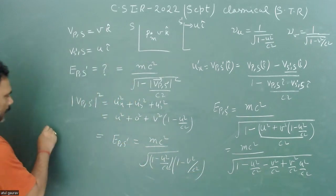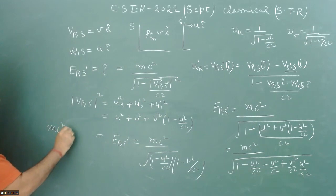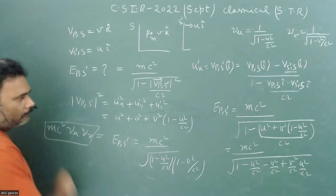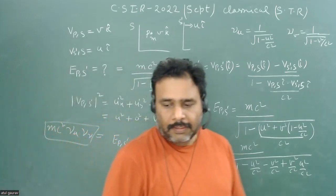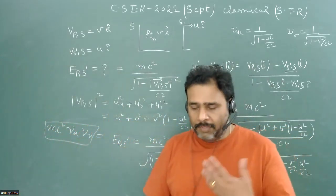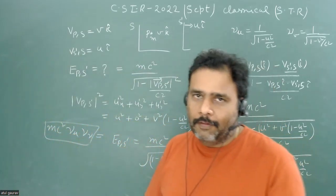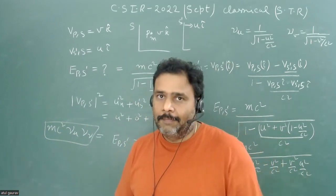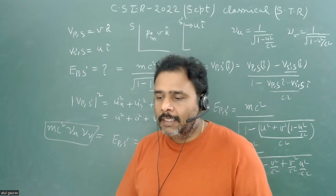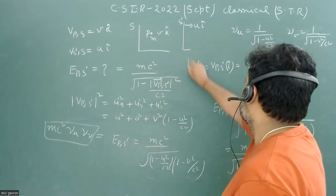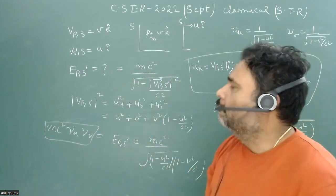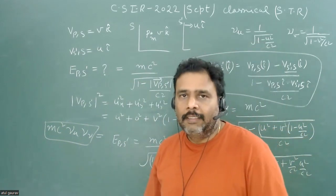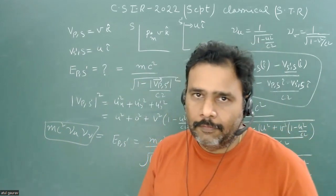Therefore, the energy of the particle with respect to S-dash is mc² × γᵤ × γᵥ, where γᵤ = 1/√(1 − u²/c²) and γᵥ = 1/√(1 − v²/c²). This is a straightforward problem but requires careful attention to notation and the velocity transformation expressions.